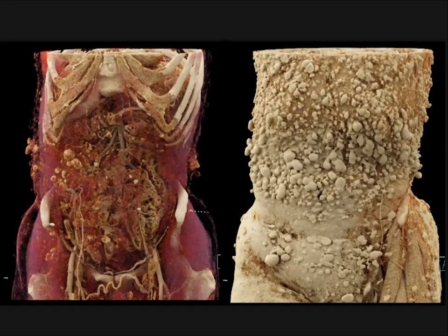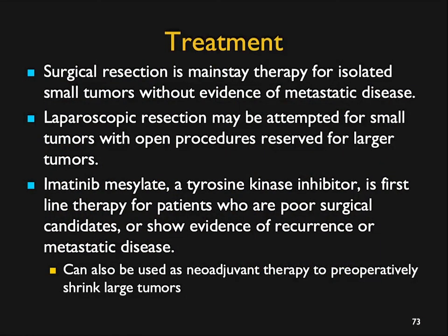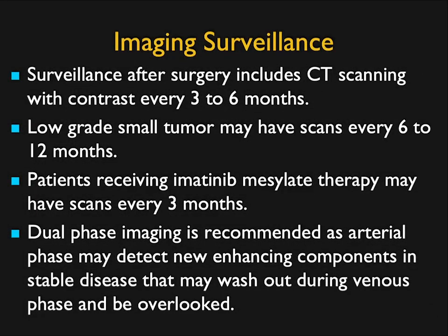Most GISTs are sporadic and incidental in nature, but there is hereditary neurofibromatosis where you need to look at skin lesions and small bowel lesions carefully, as multiple GISTs are common. Surgical resection is the mainstay of therapy when there's no metastasis. Laparoscopic surgery is possible but requires small tumors. Imatinib, a tyrosine kinase inhibitor, is first-line therapy for poor surgical candidates or those with recurrence or metastasis, and is also used as adjuvant and maintenance therapy. Post-resection surveillance every 3-6 months depending on aggressiveness; CT and MR can both be used.